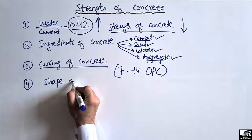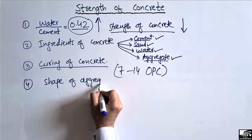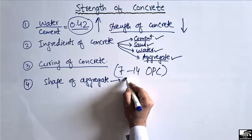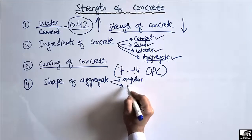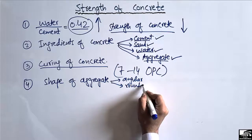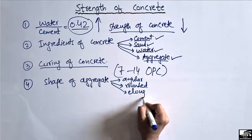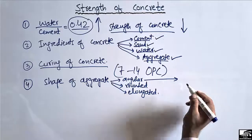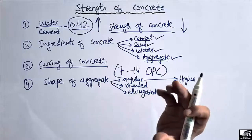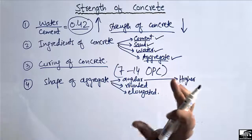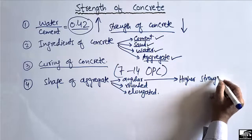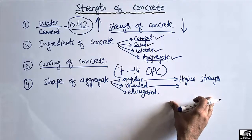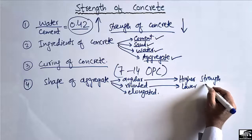The fourth factor that affects the strength of concrete is the shape of the aggregate. The shape of aggregate can be angular, cubical, rounded, elongated, or flaky. Angular shape provides higher strength because it creates interlocking space between the cement paste and aggregate. Rounded aggregate provides no interlocking space, which is why it results in lower concrete strength.